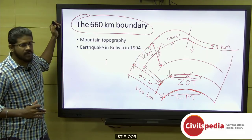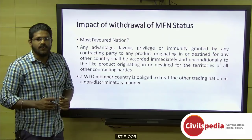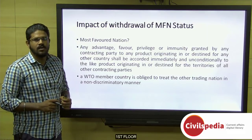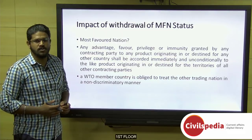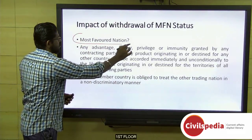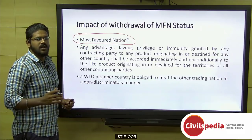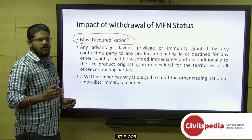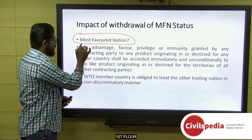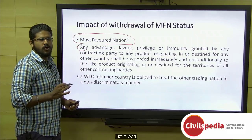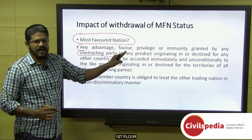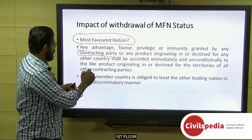India withdrew the most favored nation status to Pakistan following a terrorist attack on Indian soil, for which the terrorist organization Jaish-e-Mohammed claimed responsibility. The MFN concept comes from Article 1 of the General Agreement on Tariffs and Trade (GATT) under the WTO, which states that any advantage, favor, privilege, or immunity granted by one WTO member country to a product originating in or destined for another country...